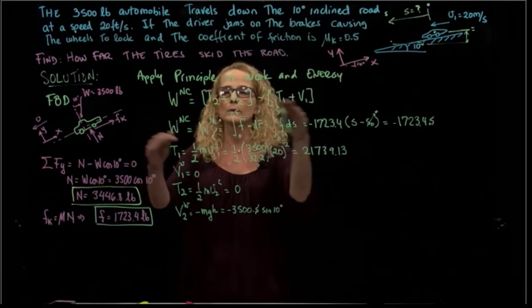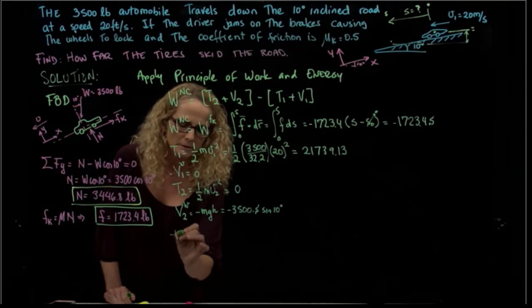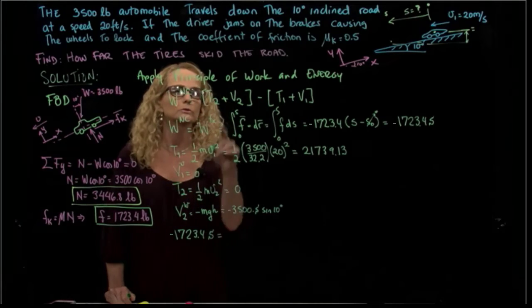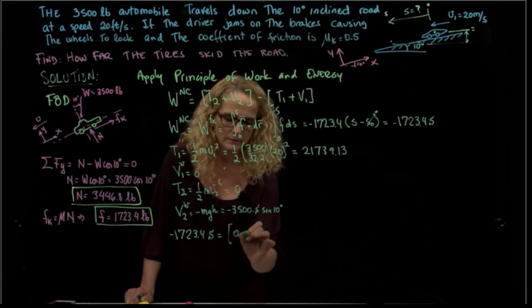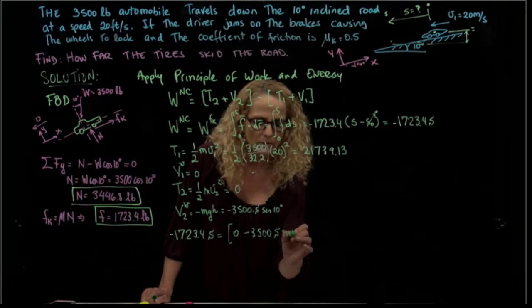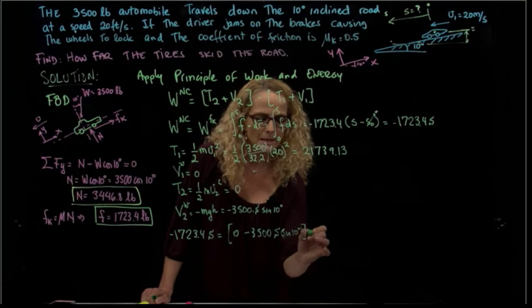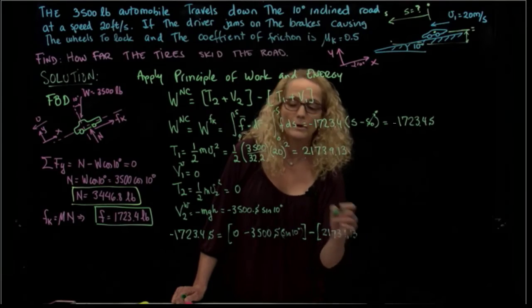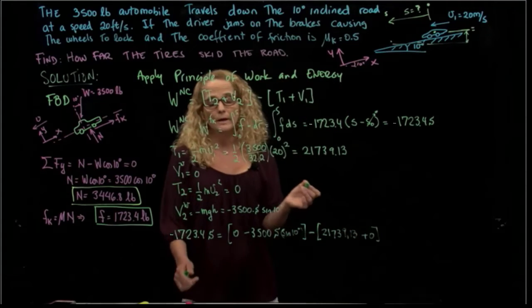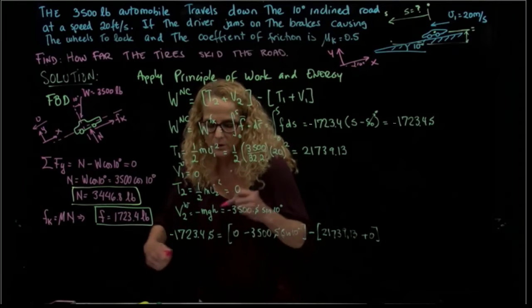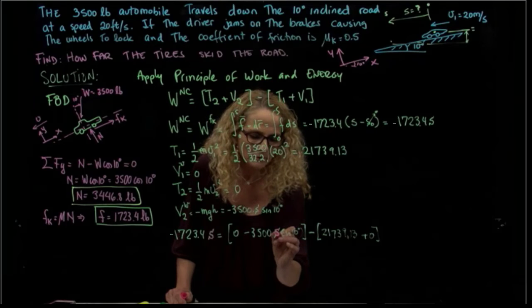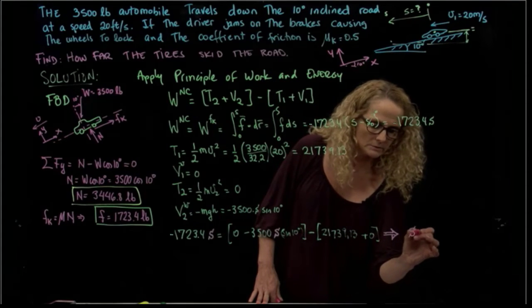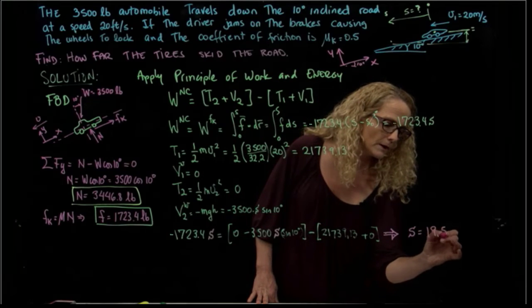Finally, we can plug that all into our equation, and then we have the work done is negative 1,723.4 S equals 0 minus 3,500 S sine of 10 minus 21,739.30 plus 0. We have two values of S right here, so we solve for S. We have S right here and S right here, so solving for S, we have S is equal to 19.5 feet.